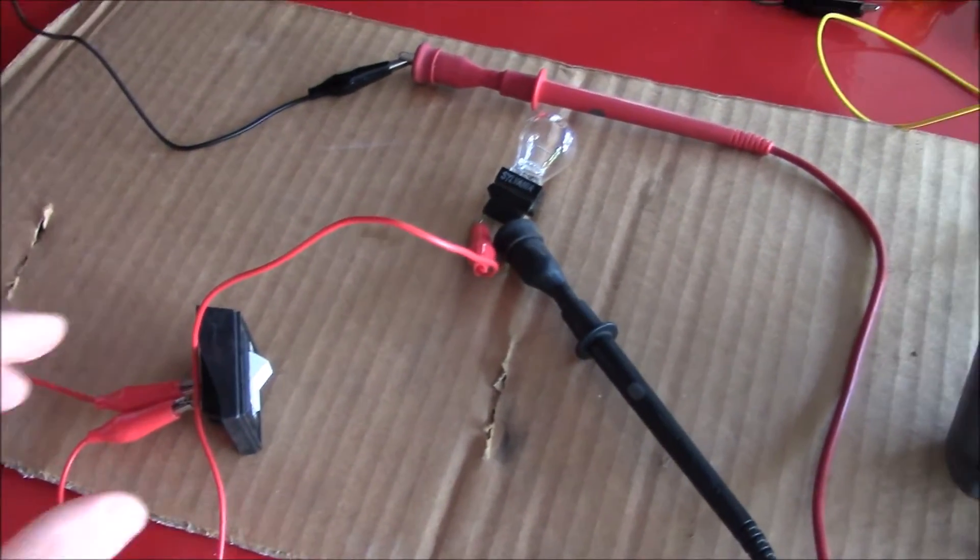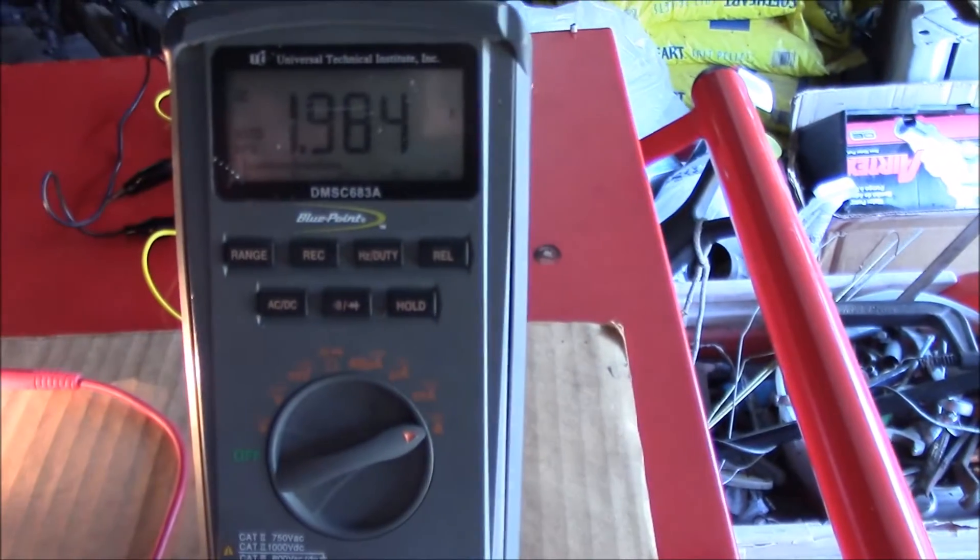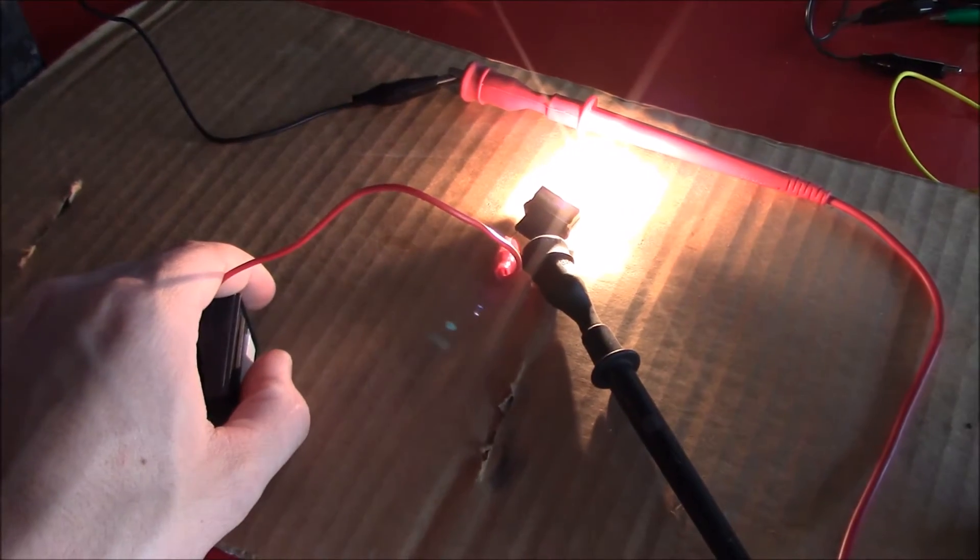Now it's part of the ground. When I turn the switch on, the light still works. And now I have my amp reading: 1.9 amps. And that's how you get the amperage in a circuit.